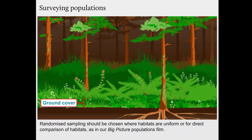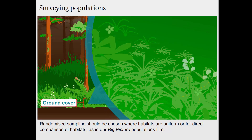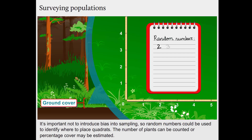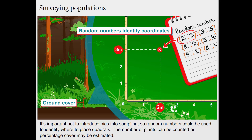Randomised sampling should be chosen where habitats are uniform, or for direct comparison of habitats. It's important not to introduce bias into sampling, so random numbers could be used to identify where to place quadrats. The number of plants can be counted, or percentage cover may be estimated.